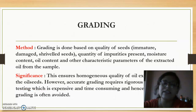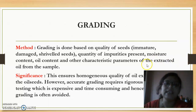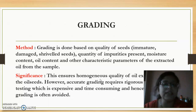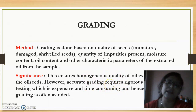The next step is the grading or sorting of seeds based on quality. This is done to get a uniform or homogeneous quality of oil. However, to get properly graded oil seeds, expensive chemical testing is required, which is often avoided in industries.